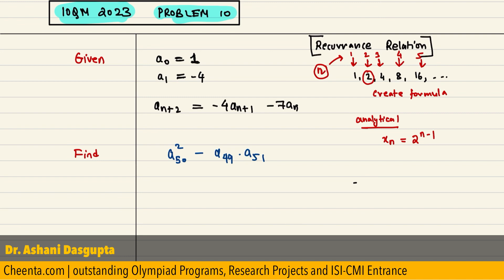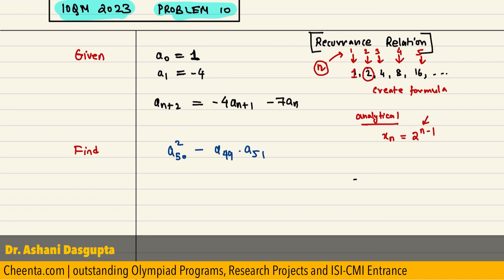If you plug in n equal to 1, you will get 2 to the power 0, which is 1. If you plug in n equals to 2, you will get 2 to the power 1, which is 2 and so on.